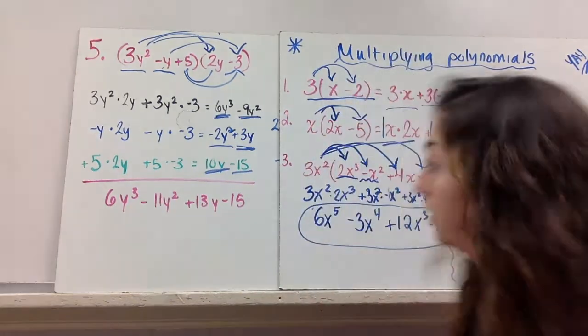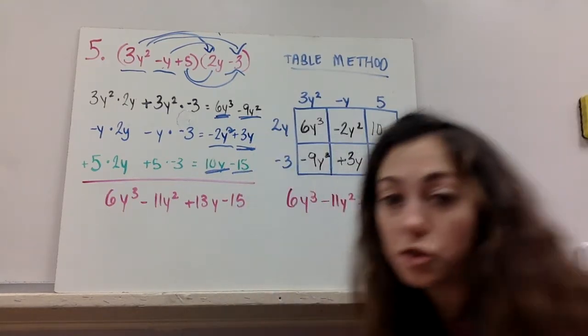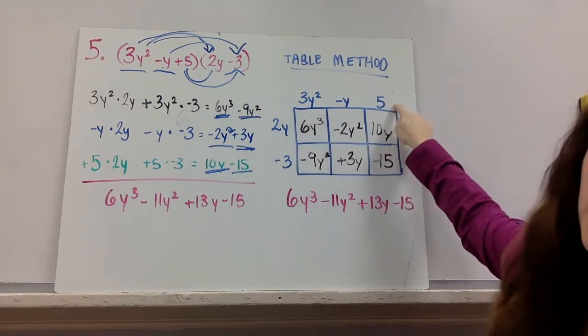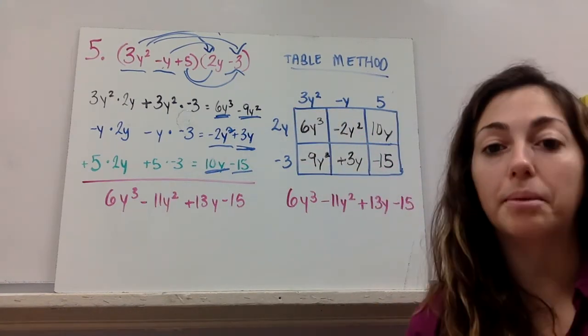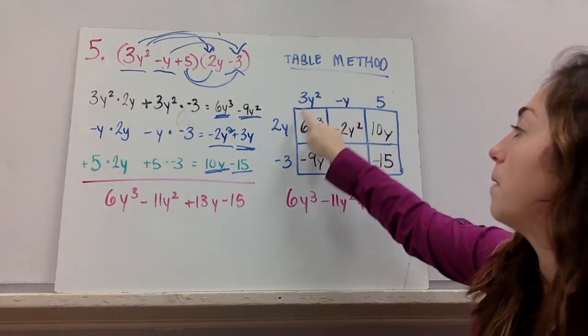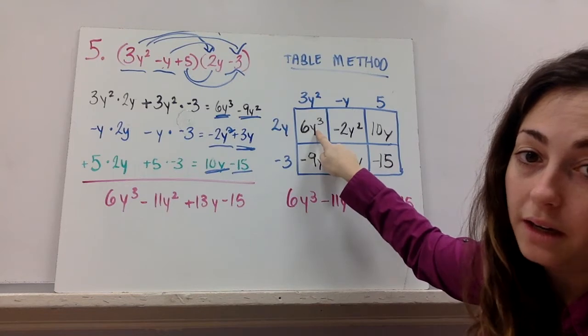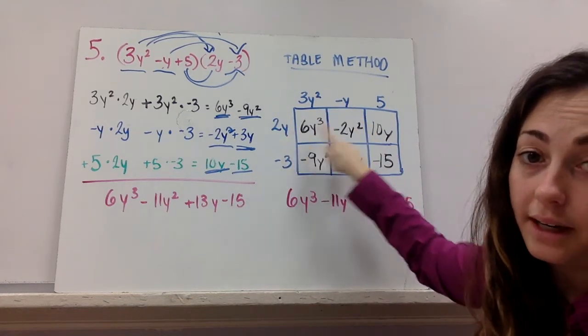Here's another method that some of you might like more. Instead of just using the distributive property, there's a table method. So you write your trinomial times your binomial. And you make a table out of it. And what you do is you multiply each term like it is. So 3y squared times that 2y. And 3y squared times that negative 3. Negative y. And so on.